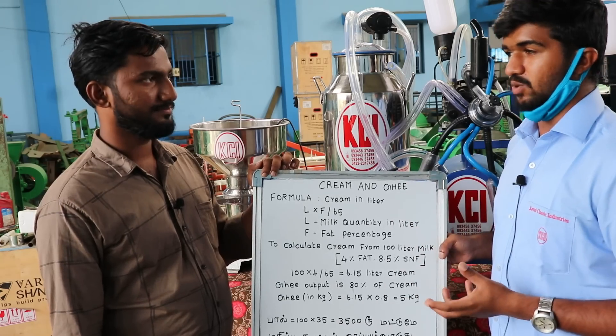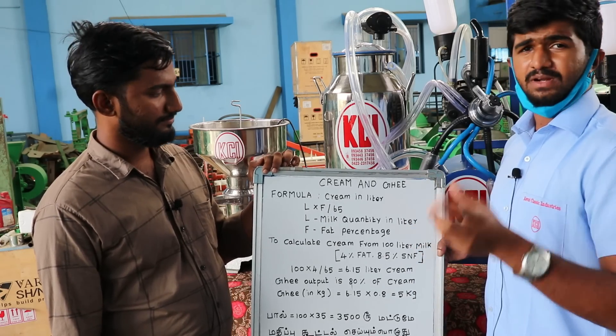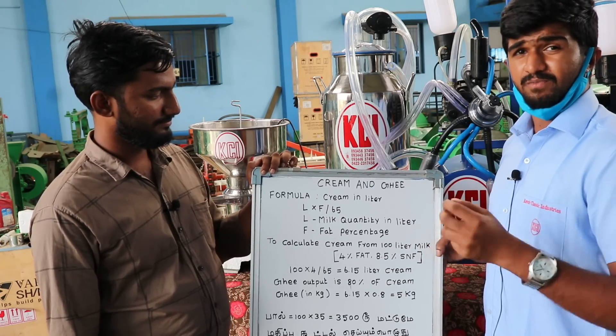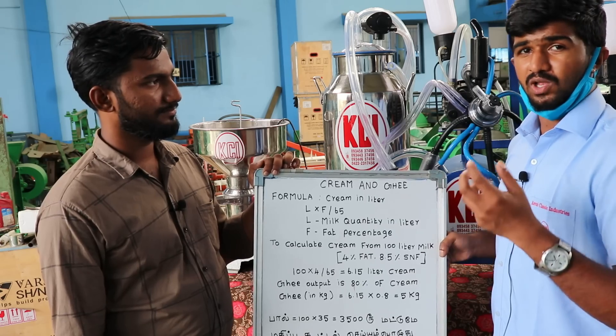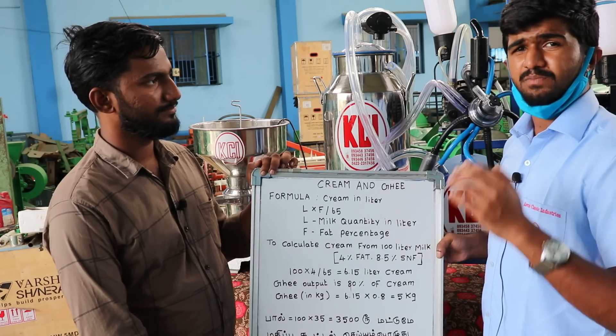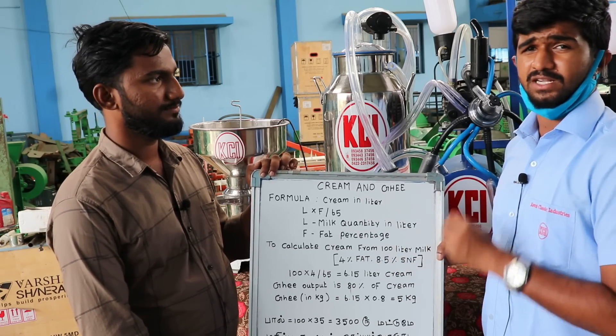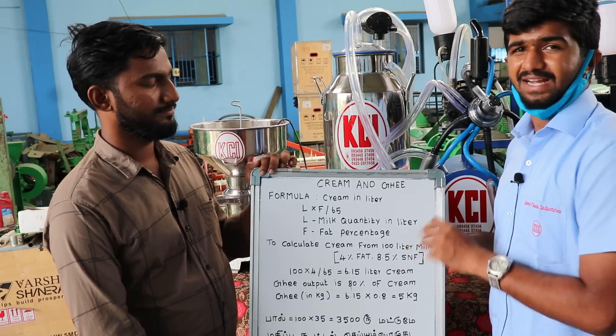Then the profit increases. So, the value addition is the cream separator. Now the milk has a full flavor. Then the ghee, butter — the profit is a minimum of 60% to 100%. That is a simple calculation.